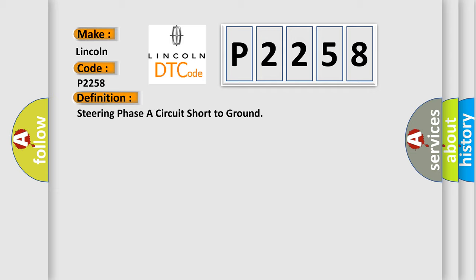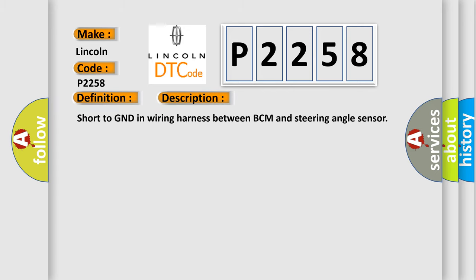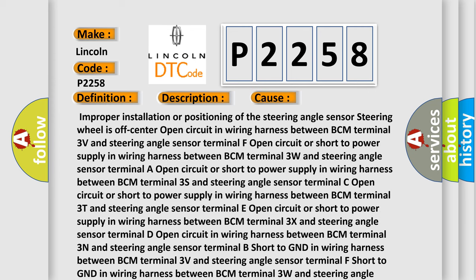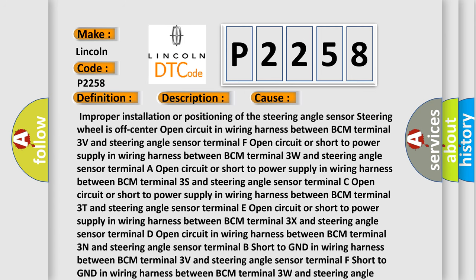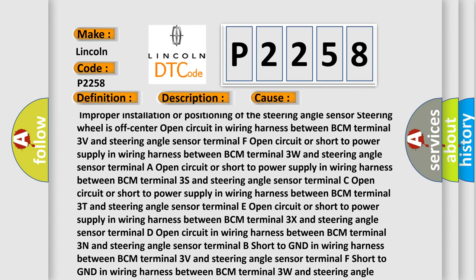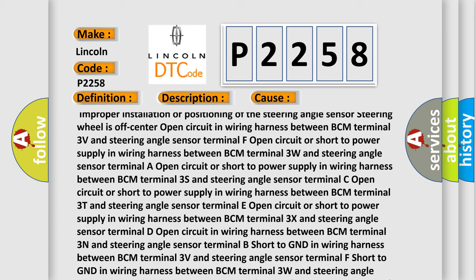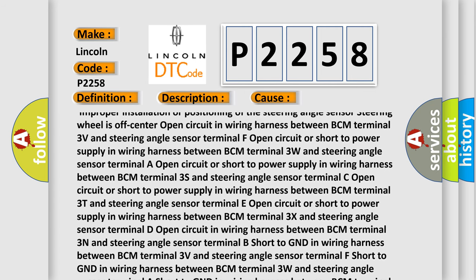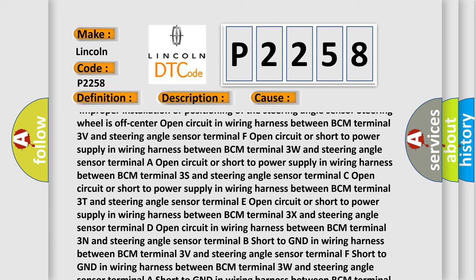Here is a short description of this DTC code. Short to GND in wiring harness between BCM and steering angle sensor. This diagnostic error occurs most often in these cases: improper installation or positioning of the steering angle sensor, steering wheel is off-center, open circuit in wiring harness between BCM Terminal 3V and steering angle sensor Terminal F, or open circuit or short to power supply in wiring harness between BCM Terminal 3W and steering angle sensor Terminal C.